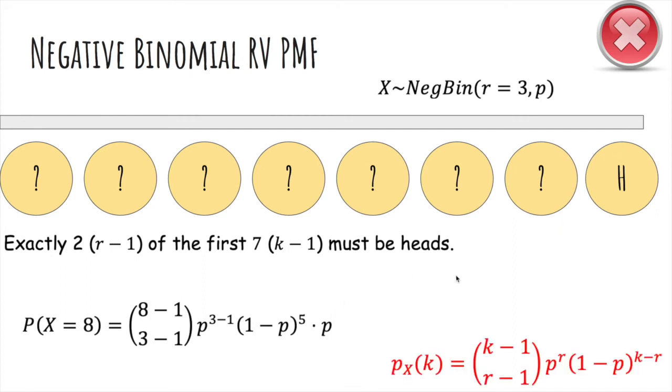And so the probability mass function is, the probability that takes k tries to get r successes is in the first k minus 1 flips, we get r minus 1 heads. And then we get r heads total and k minus r tails total.